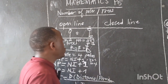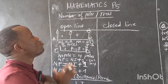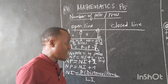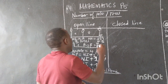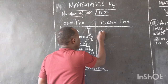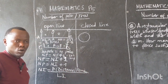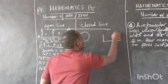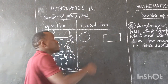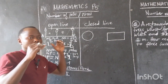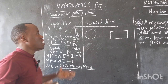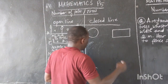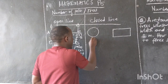Let's go to a closed line. How do we find the number of trees or the number of poles on a closed line? A closed line can be a circle or a rectangle, depending on the shape of a geometrical figure given on a certain field or garden.